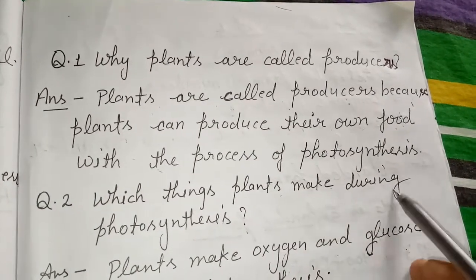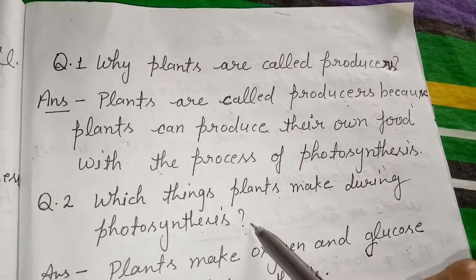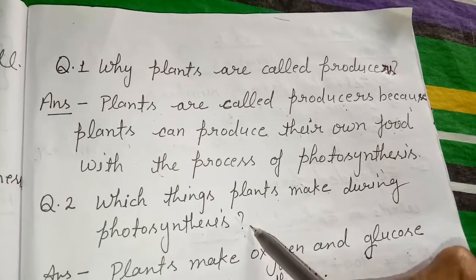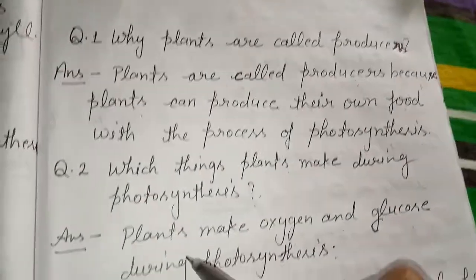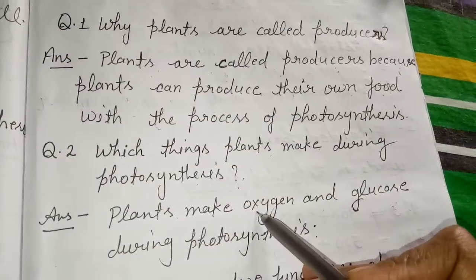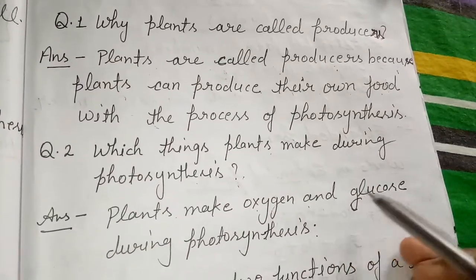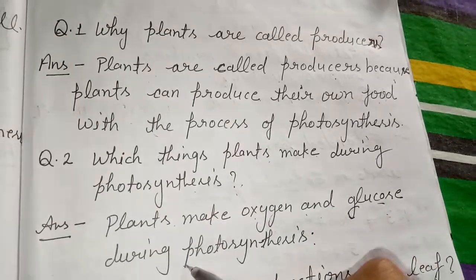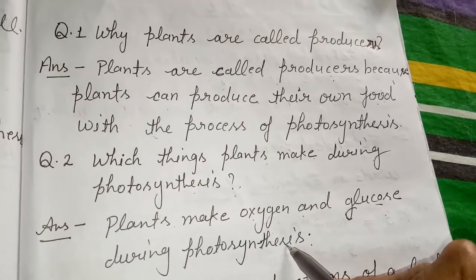Next question: which things do plants make during photosynthesis? The answer is: plants make oxygen and glucose during photosynthesis.